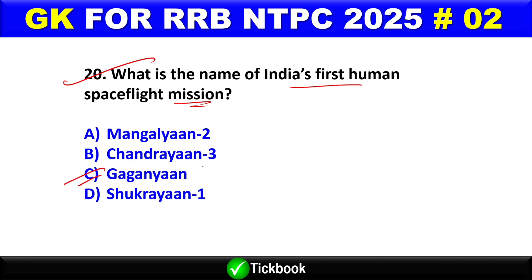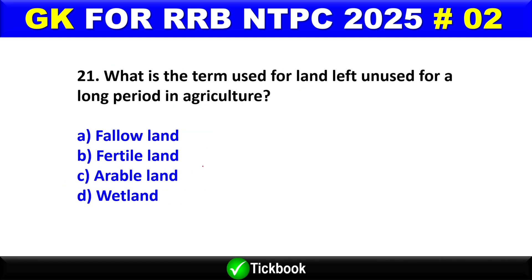Question number 20: What is the name of India's first human space flight mission? Option C is the right answer — Gaganyaan. Question number 21: What is the term used for land left unused for a long period in agriculture? Option A is the right answer — fallow land.